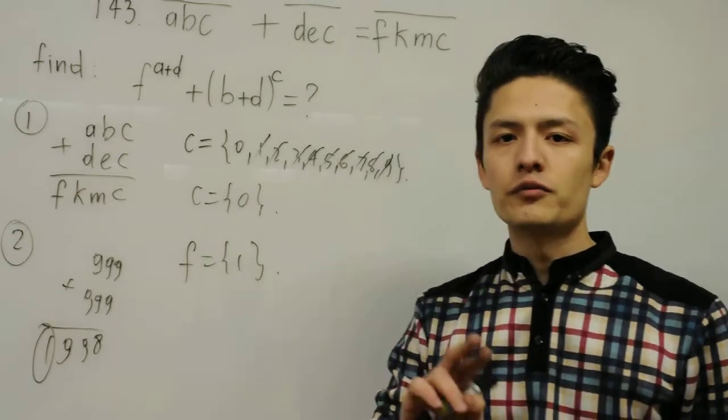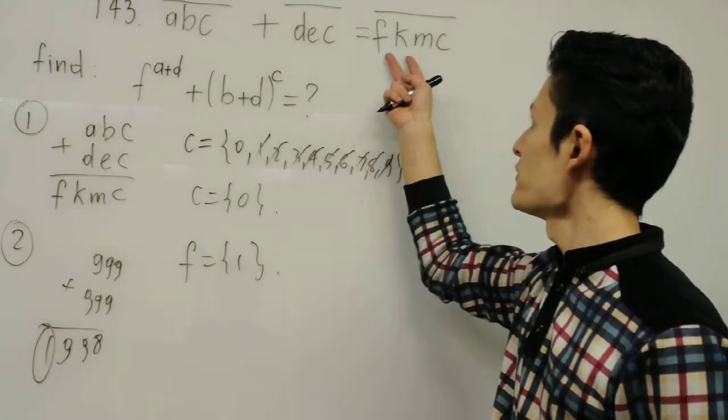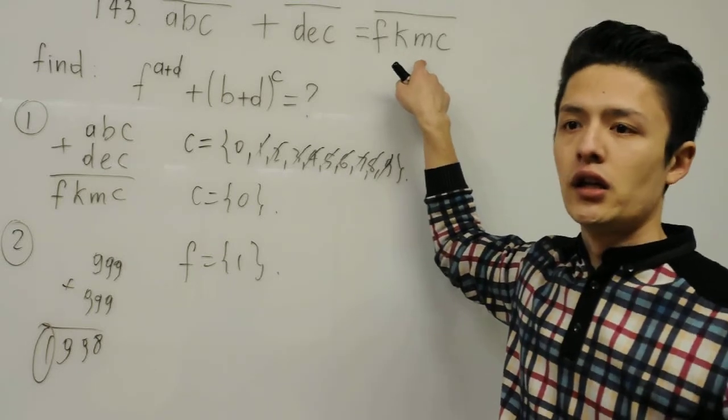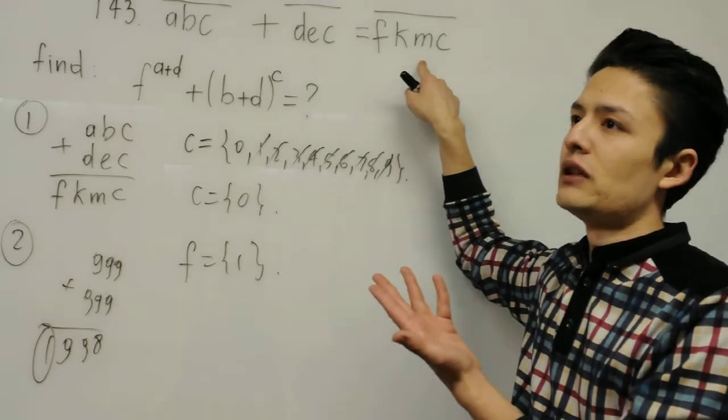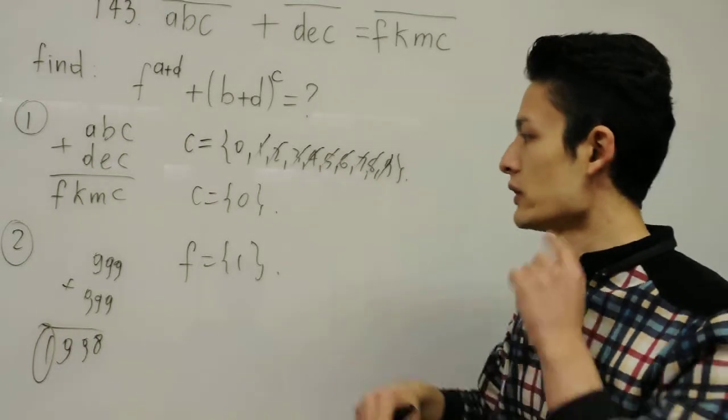So I say F can only be 1. And I say F cannot be 2, 3, or 4, 5. And I say F cannot be 0, because if F is 0, it will be 0kmc, and this will not be, if F is 0, it will be three-digit number, not 4. That's why F is only 1.